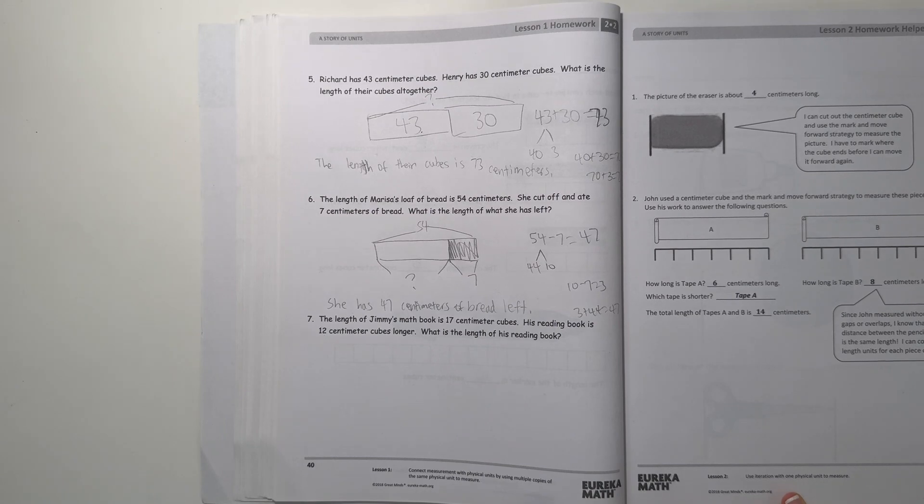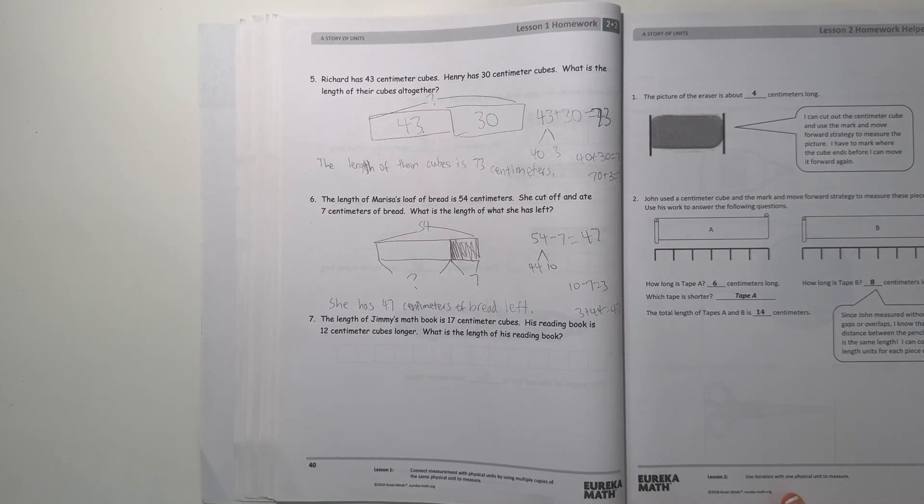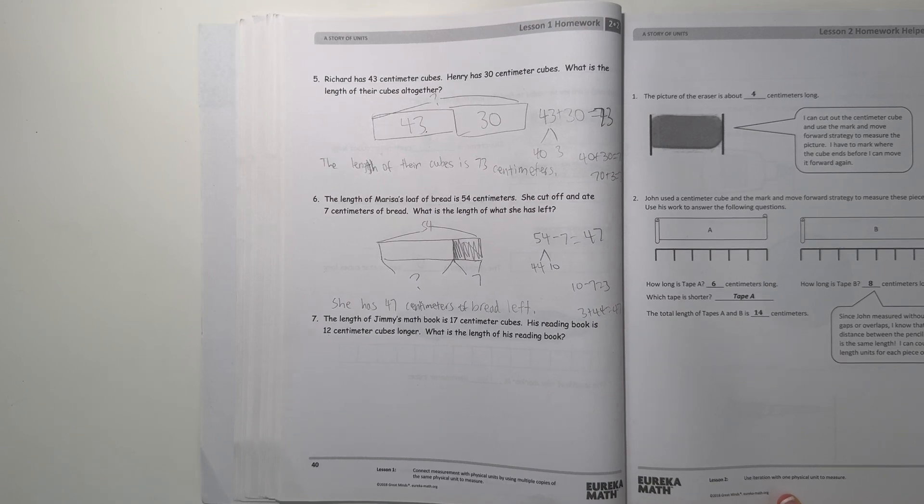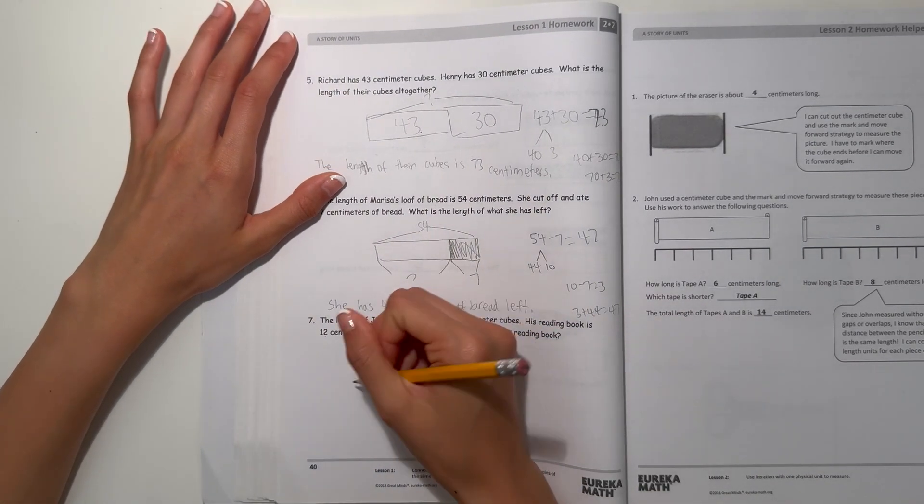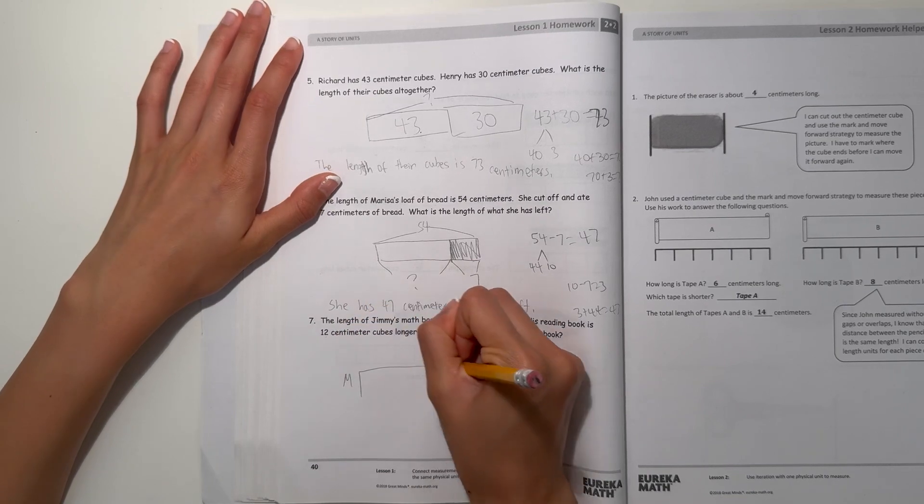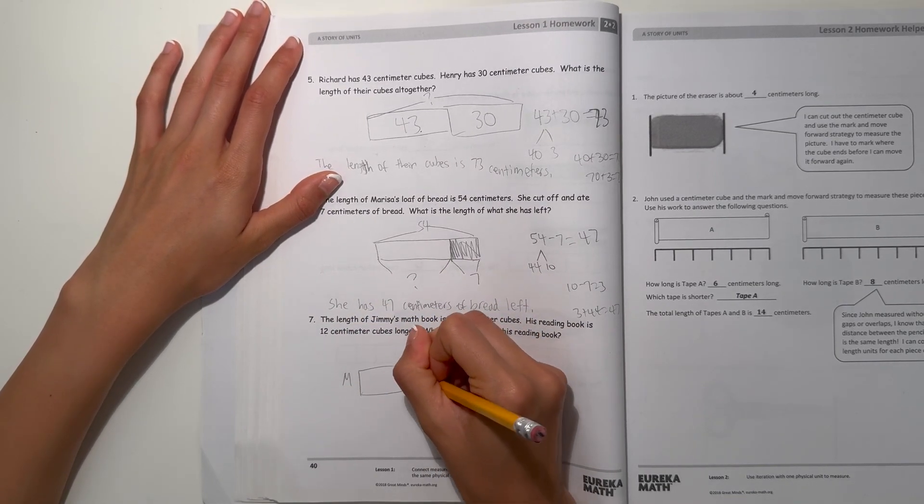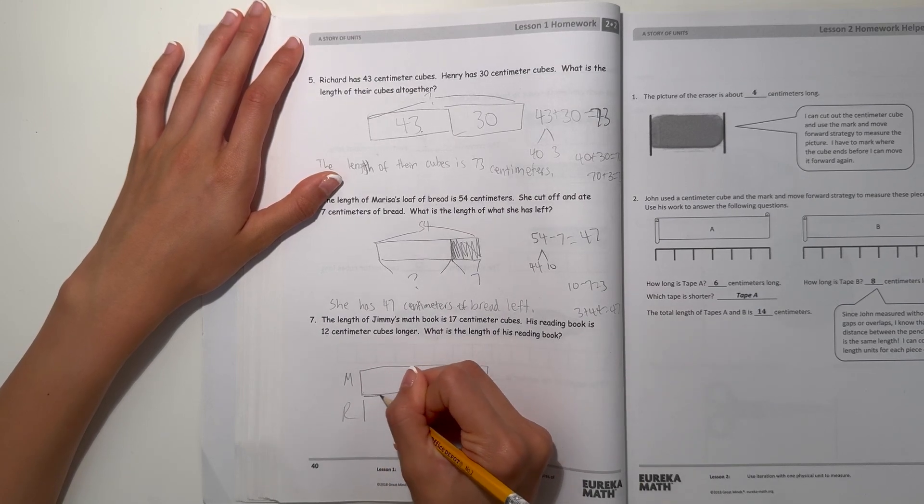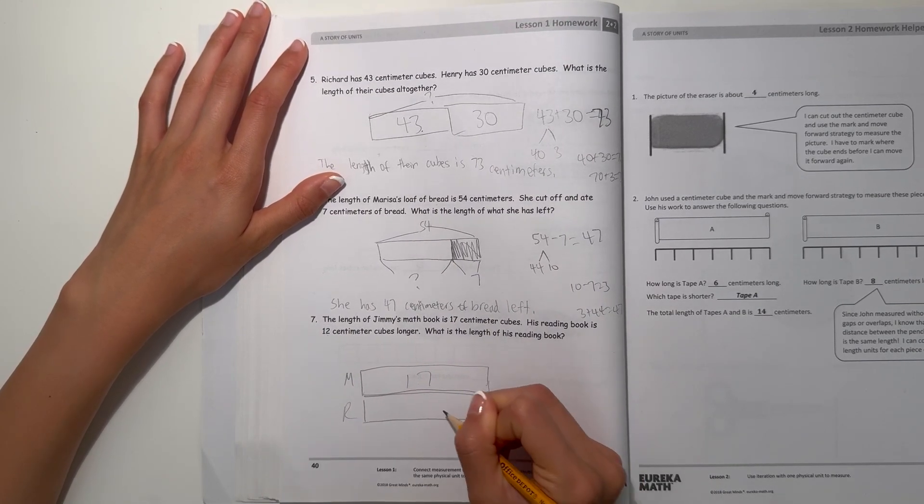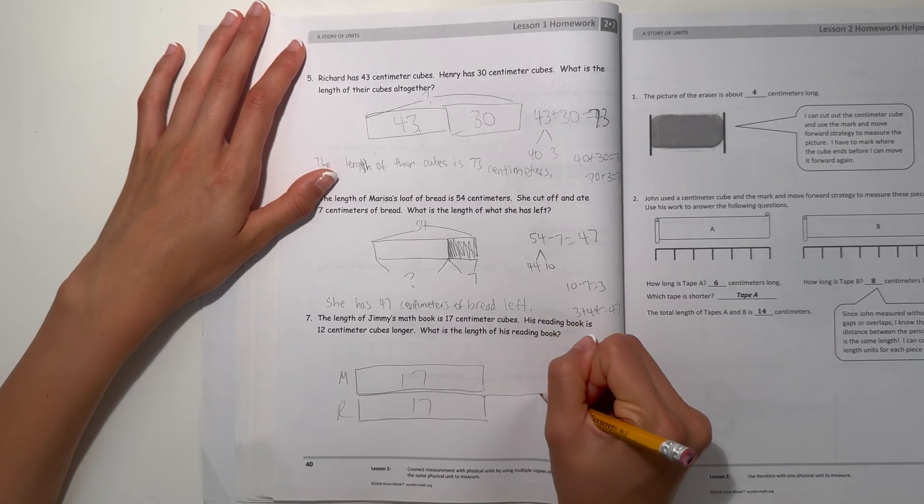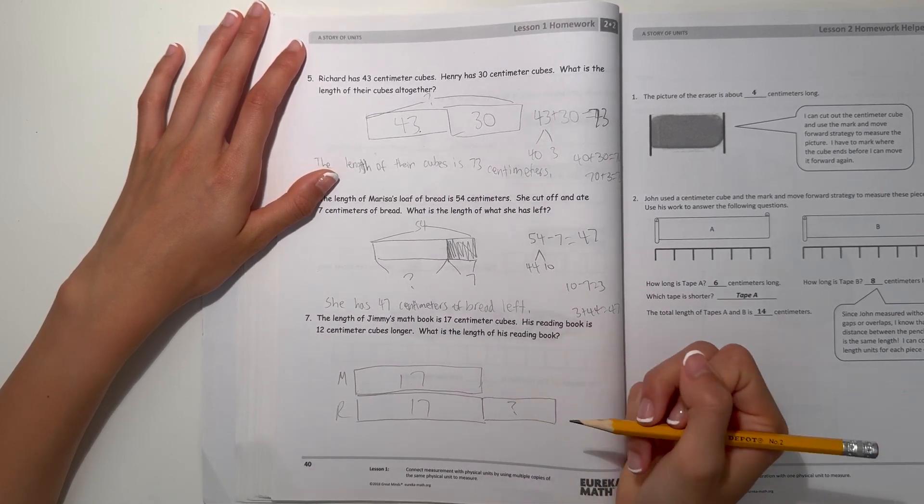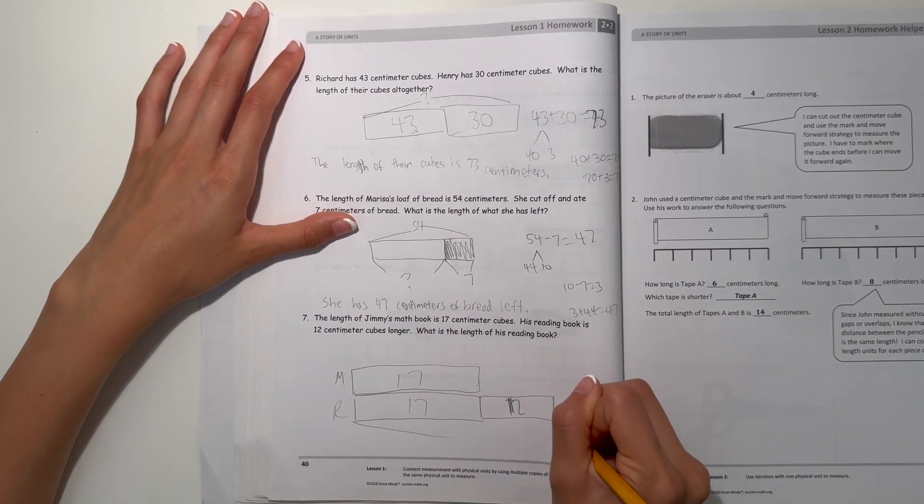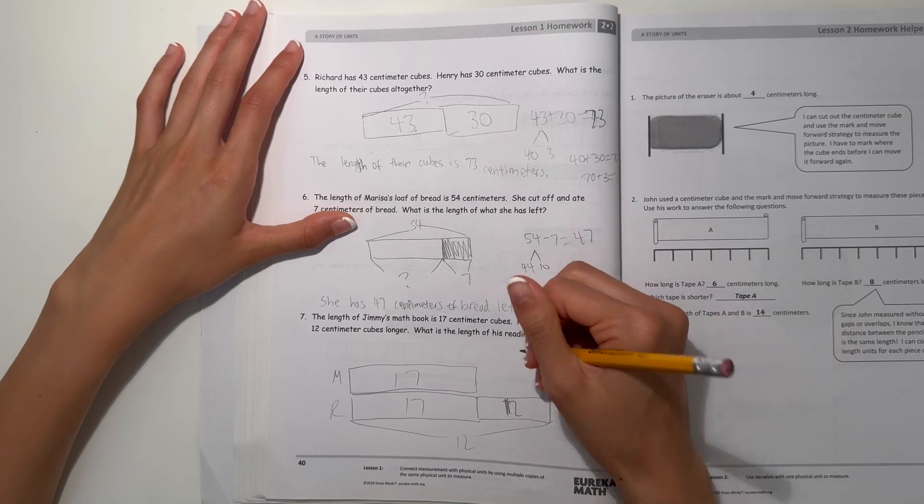Number 7: The length of Jimmy's math book is 17 centimeter cubes. His reading book is 12 centimeter cubes longer. What's the length of his reading book? Let's label M for math, so it's 17 centimeters. His reading book R is 12 longer, so it has to be at least 17 and then 12 longer. This is what we're trying to figure out.